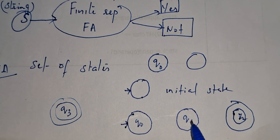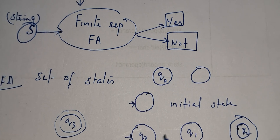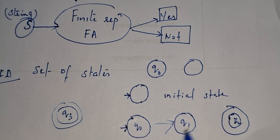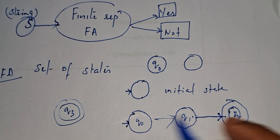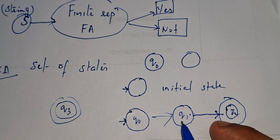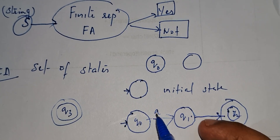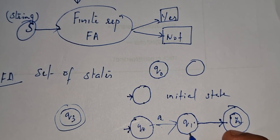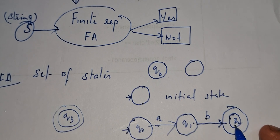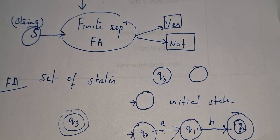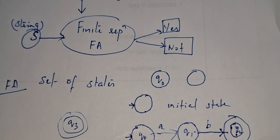In order to move from one state to another state we need to show a transition. For example, q0 moves to q1 while seeing input symbol 'a', and q1 moves to q2 while seeing input symbol 'b'. So transitions between states are shown with an arrow mark labeled with the input symbol. Here 'a' and 'b' are the alphabet input symbols.